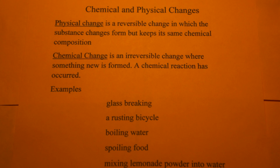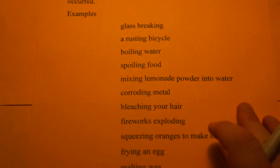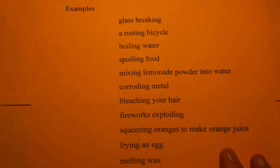Chemical change, however, is an irreversible change where something new is formed, and you can tell this because a chemical reaction has occurred. So I have a few examples of chemical and physical changes and we'll discuss them.